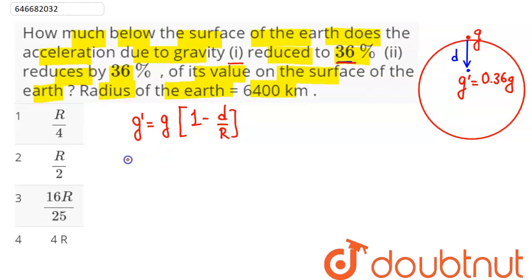So this comes out to be g dash here is 0.36 of g which is equal to g into 1 minus d upon r. So this comes out to be 0.36 as 1 minus d upon r. So this d upon r value comes out to be 1 minus 0.36 which here is 0.64.